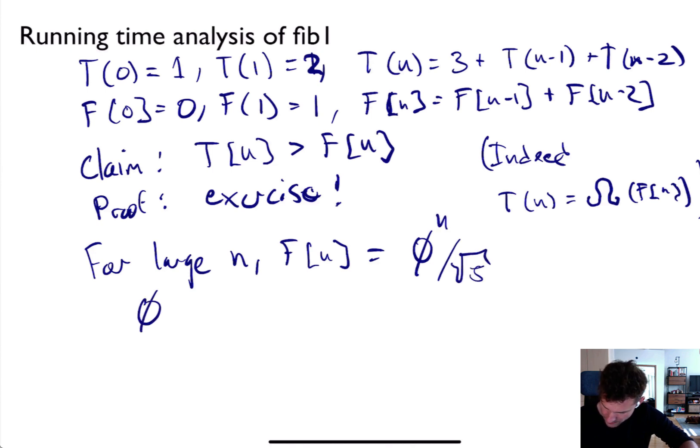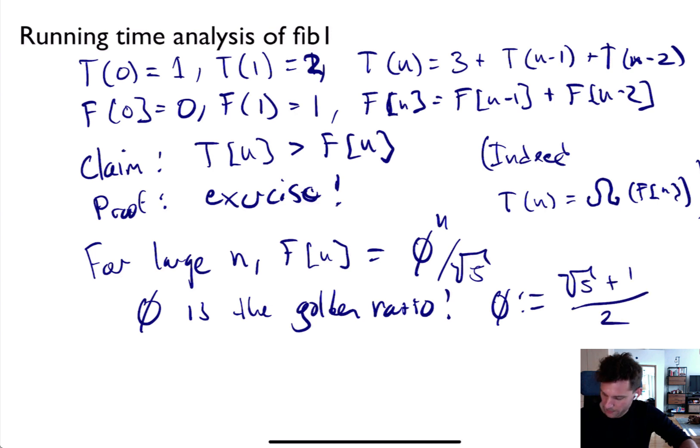So how fast does F(n) grow? Well, you might not know this, but it turns out that we know asymptotically, for large n, F(n) is roughly what we call φ^n over the square root of 5. What's φ? φ is the golden ratio. You can look up the golden ratio if you like on your own time. It's an interesting quantity, it comes up all over the place.